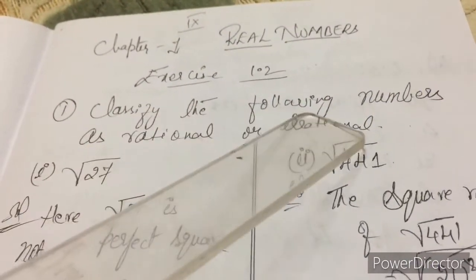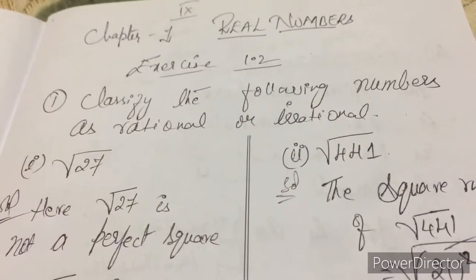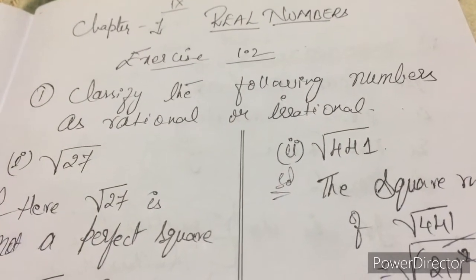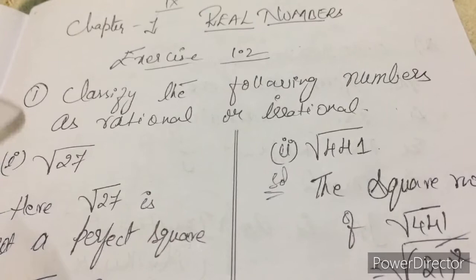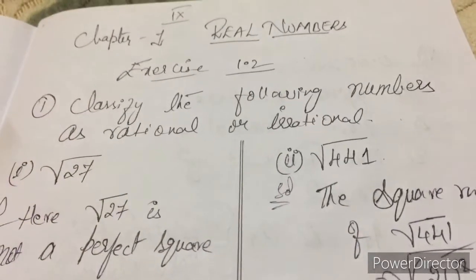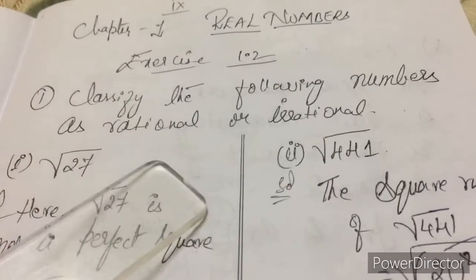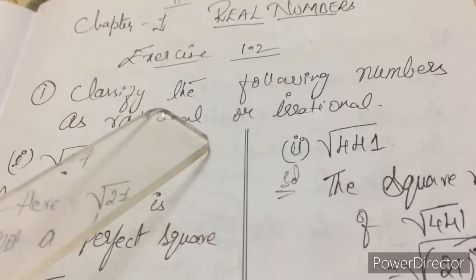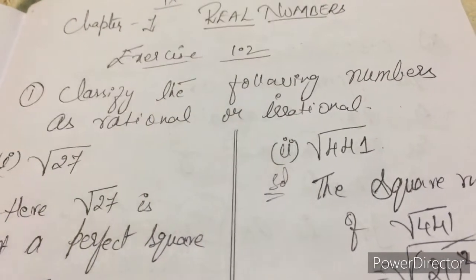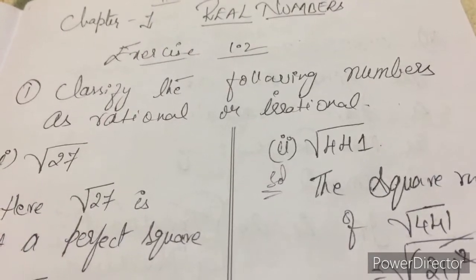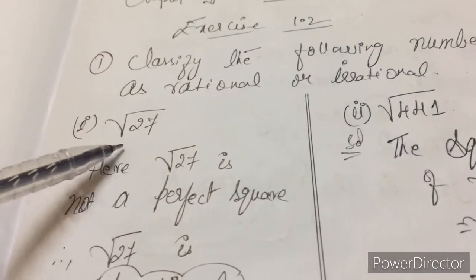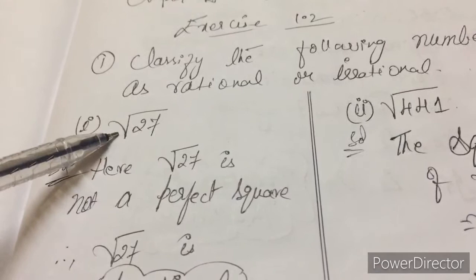Classify the following numbers as rational or irrational. As I already said, what is rational and what is irrational? The number which can be written in P by Q form is rational, which cannot be written is irrational. Now coming here, the solutions and question both are there. Please look towards the video.